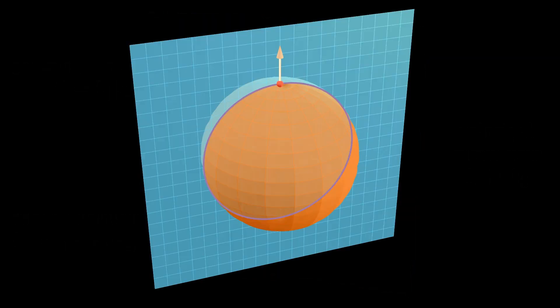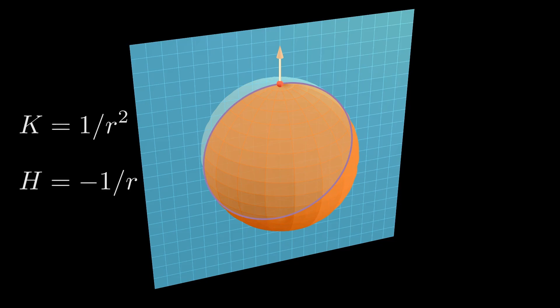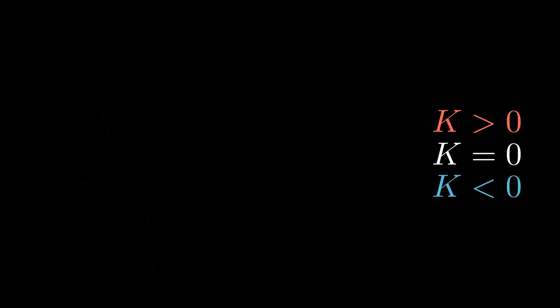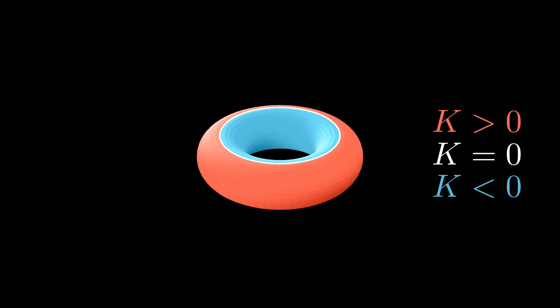For example, for a sphere, every normal section is a circle, so both principal curvatures are 1 over the radius. The Gaussian curvature is 1 over r squared and the mean curvature 1 over r. For a torus, on the outer side of the torus, the Gaussian curvature is positive, as both principal curvatures have the same sign.